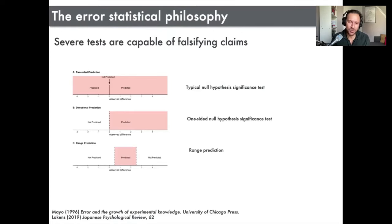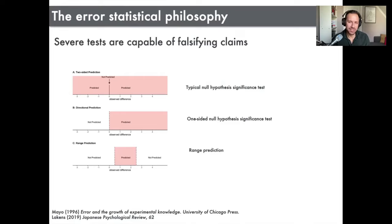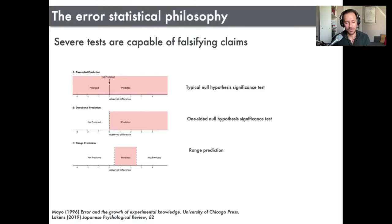You can make it even easier to falsify by doing a range prediction — you might say there's going to be a difference, it's going to be in a particular direction, and it's going to be within a specific range. Think about your own research field: what if it was so robust that studies could say we predict a difference and it will be within this particular range? That would be quite a mature science, but I don't think a lot of research fields are there yet — that's where we need to go to improve reproducibility.